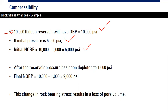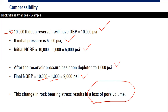If the reservoir pressure has been depleted to 1,000 psi, the net overburden pressure will increase to 9,000 psi. The net overburden pressure will increase as reservoir pressure decreases. This change in rock-bearing stress will result in a loss of pore volume — as the reservoir pressure decreases, net overburden pressure increases and it will compress the reservoir, causing the pore volume to decrease.